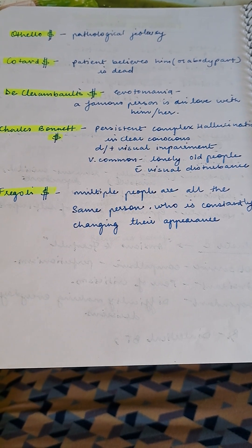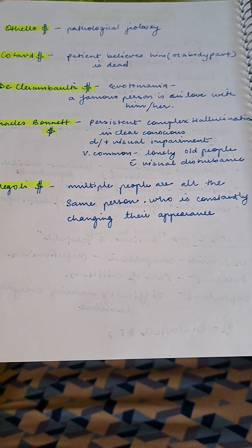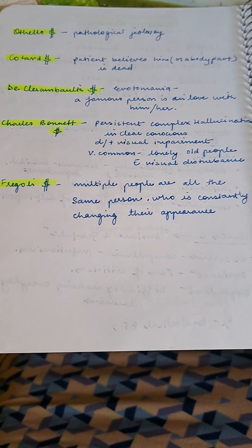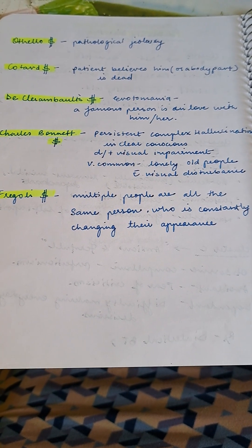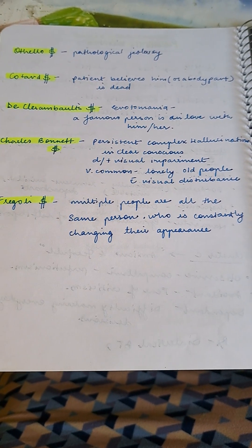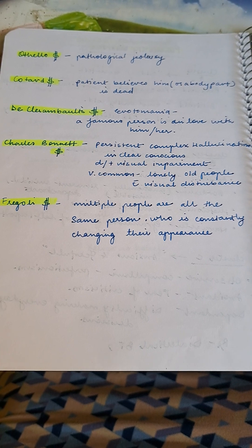Charles Bonnet syndrome: persistent complex hallucinations with clear consciousness due to visual impairment. Very common in lonely old people with visual disturbances. Fregoli syndrome: multiple people are all the same person constantly changing their appearance.